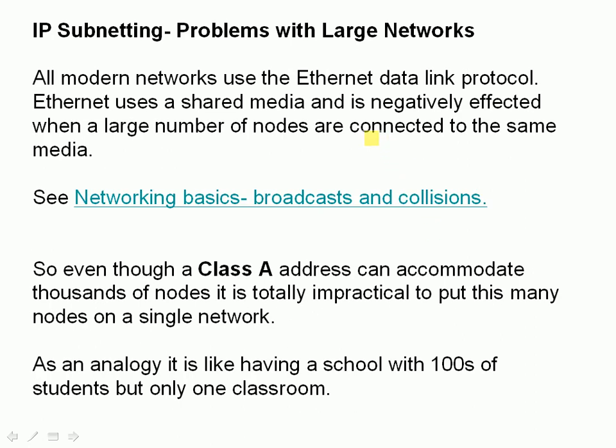So why do we need subnetting? There's a problem with large networks. All modern networks use Ethernet as a data link protocol, and Ethernet uses what's called shared media technology, and it's negatively affected when a large number of nodes are connected to the same media. Even though a class A address can accommodate thousands of nodes, because it has 24 bits allocated to the node, it's totally impractical to put that many nodes on a single network.